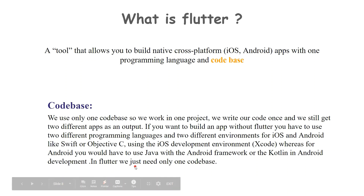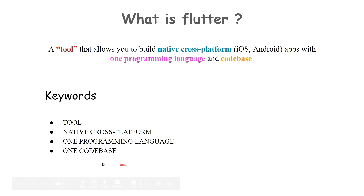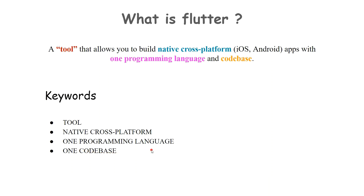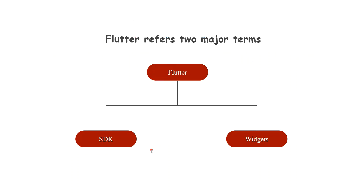Now let us summarize what Flutter is. These keywords define Flutter. Flutter refers to two major terms: one is SDK and the other is Widgets.